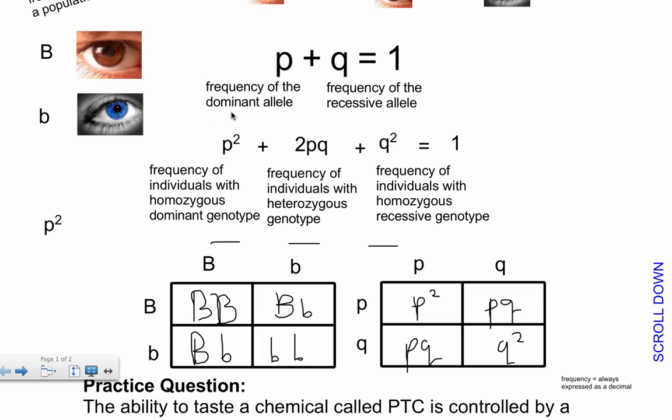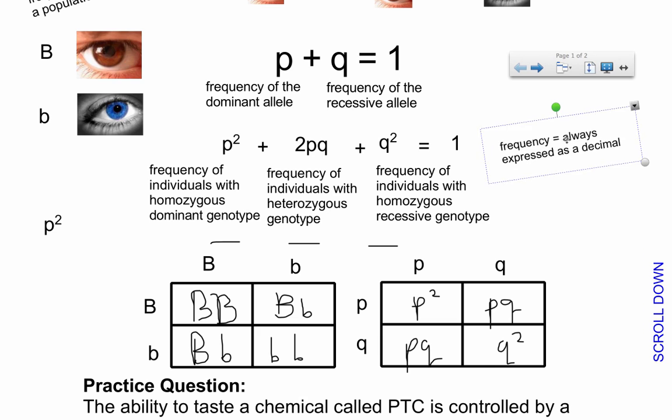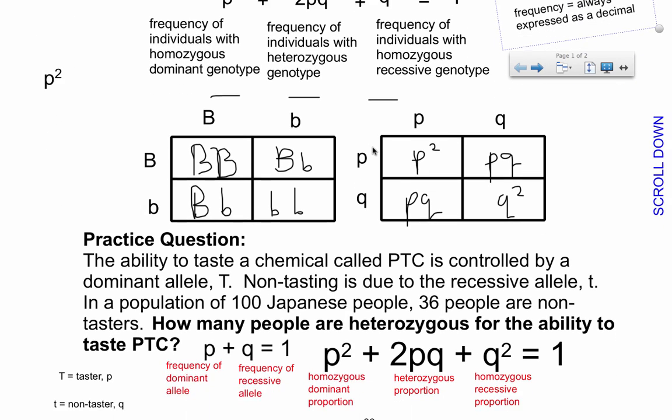So this is all well and good, but how do we actually use this in various types of calculations? So I'm going to demonstrate that using a little practice question down here. One thing to keep in mind, frequency, you should try to always express it as a decimal. So the frequency of the dominant allele is 60%, that would be 0.6. And then Q would be 1 minus 0.6, which is 0.4. So here's a question.